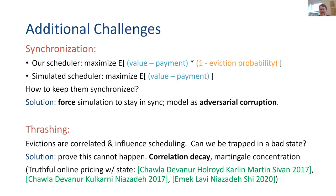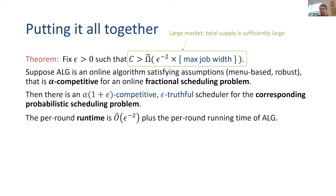Please see the paper for details. It's related to the recent theory literature on stability with online pricing — a beautiful set of theory that's coming together. It relates to correlation decay and Martingale concentration. Putting this all together, we get a theorem that basically says: if I have a fractional scheduler, I can turn it into a probabilistic scheduler without too much loss and without too much overhead in terms of running time.